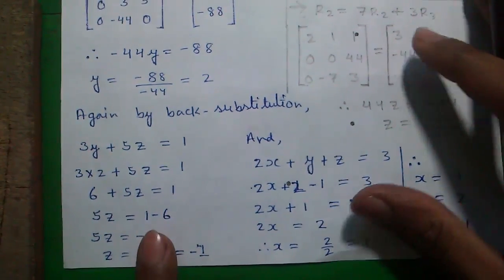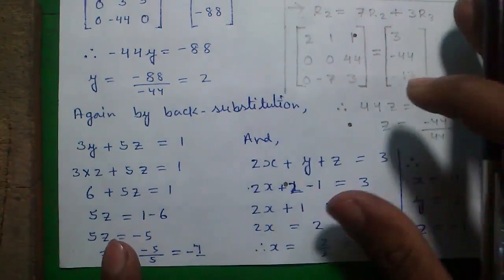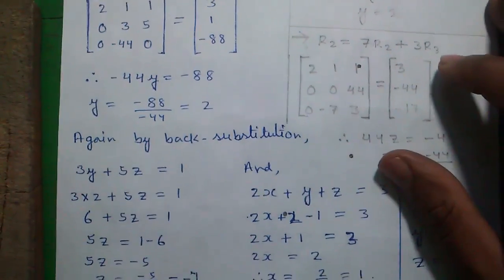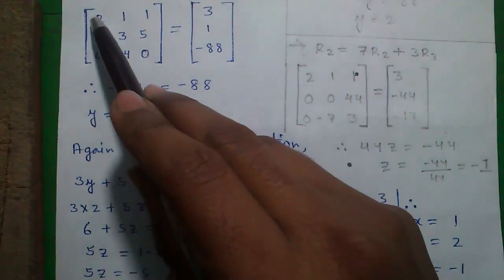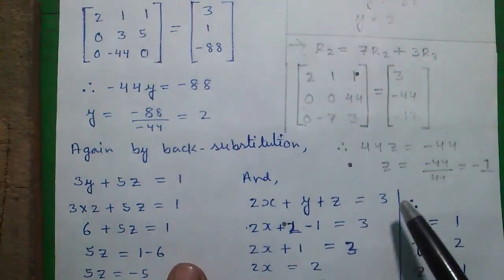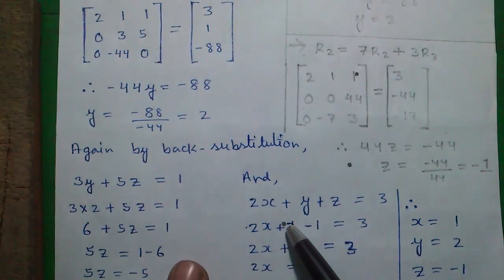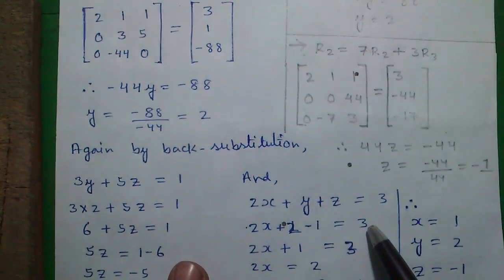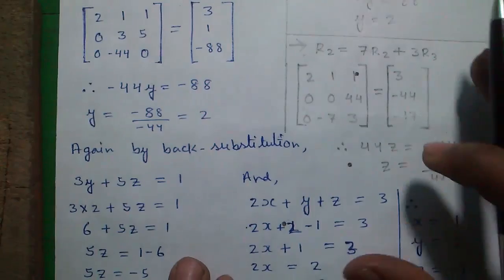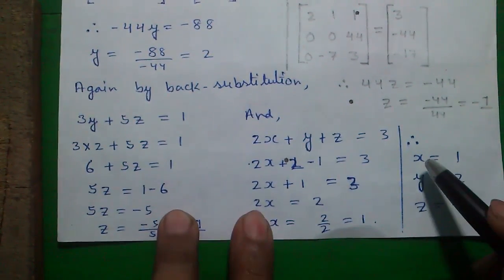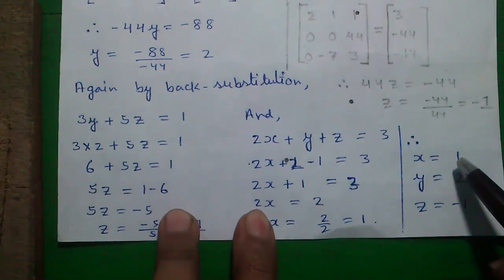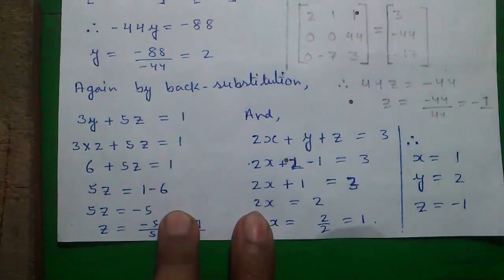Now we have got value of Z and value of Y and you can put that in this equation. So 2X plus Y plus Z equals to 3. 2X plus Y is 2 and Z is minus 1 equals to 3. So 2X plus 1 equals to 3. 2X equals to 3 minus 1, which is 2. So X equals to 2 divided by 2, which is 1. So we have got our values: X equals to 1, Y equals to 2 and Z equals to minus 1.